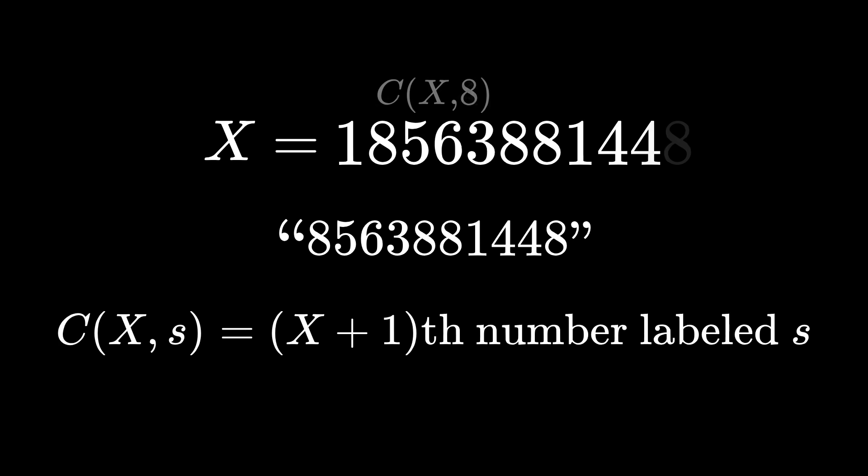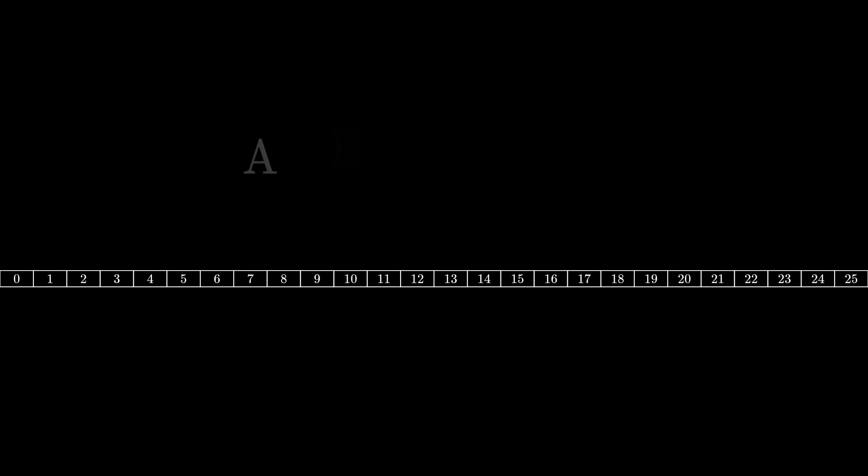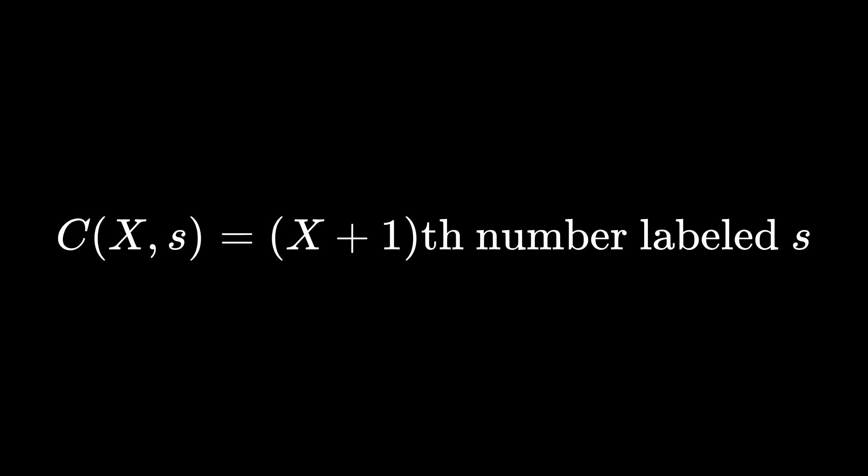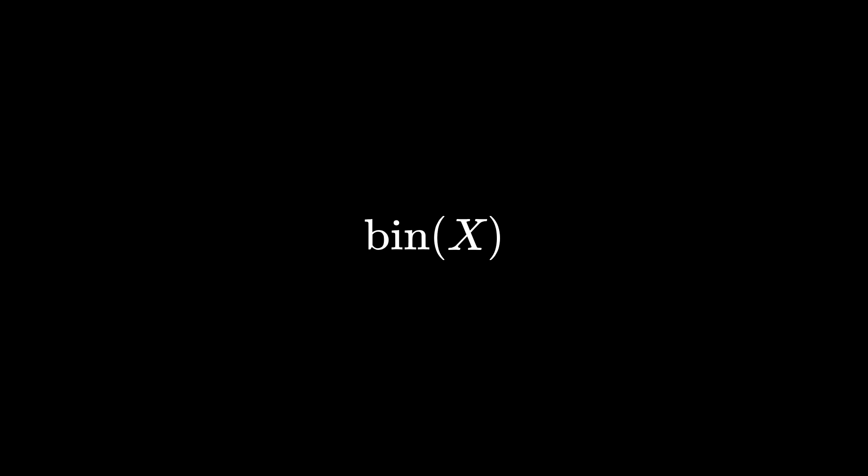We'll call this process c, so c of x comma 4 is the x plus 1th number in the set of all numbers labeled 4. Now we just encode by repeatedly setting x to c of x comma symbol. The reason we do it this roundabout way is because to incorporate probability, we'll rearrange these labels so they won't correspond to multiplication and addition anymore, but some analogous operation in an asymmetric numeral system. So if we have n symbols, then each natural number will be labeled one of the n symbols instead of one of 10 digits. The encoding will still be the same, we're still just finding the x plus 1th number labeled with a symbol. Their labelings will just be asymmetric.